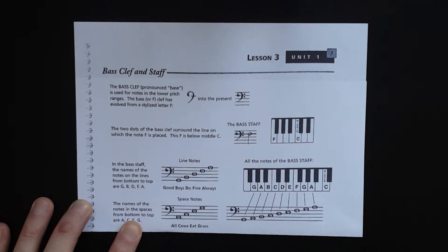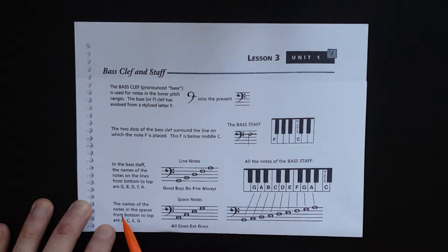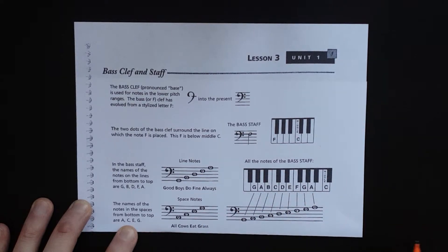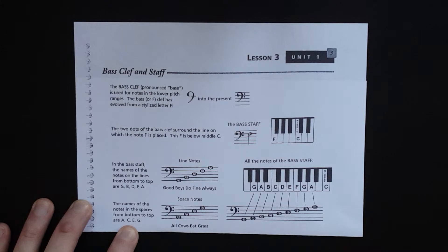The names of the notes in the spaces from bottom to top are A-C-E-G. For this we go 'All Cows Eat Grass.' It used to be 'All Cars Eat Gas,' but that's not true anymore.